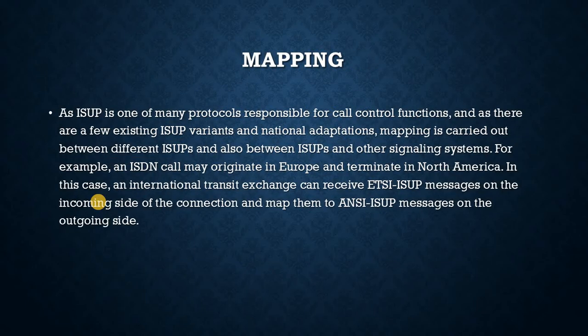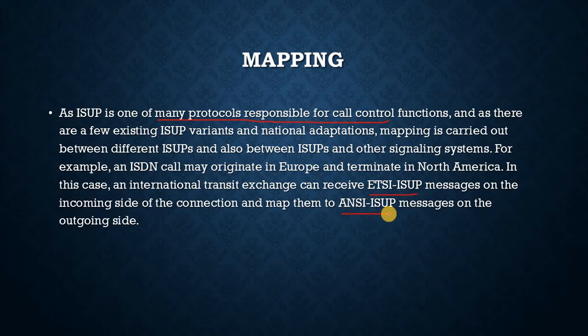Mapping. As ISUP is one of many protocols responsible for call control functions, and as there are a few existing ISUP variants and national adaptations, mapping is carried out between different ISUPs and also between ISUPs and other signaling systems. For example, an ISDN call may originate in Europe and terminate in North America. In this case, an international transit exchange can receive ETSI ISUP messages on the incoming side and map them to ANSI ISUP messages on the outgoing side. The traffic control system handles routing and signaling compatibility checks, and the routing analysis function checks signaling capabilities when deciding where a call can be routed.